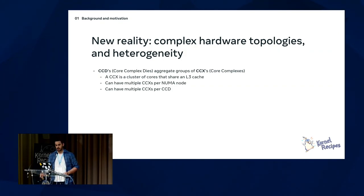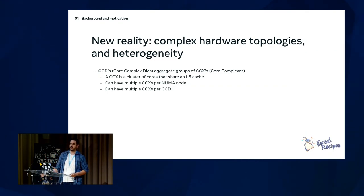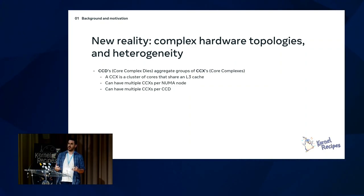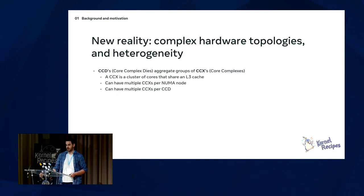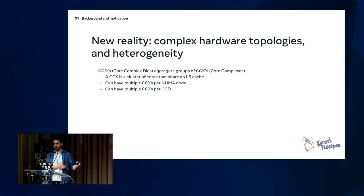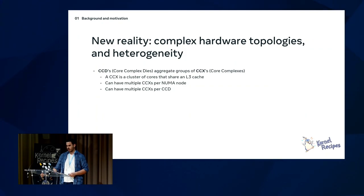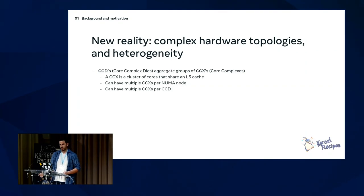Core complex dies and core complexes are a new thing in x86 — you have a chip with multiple L3 caches on a single NUMA node. That's a core complex. The access latencies between tasks in different core complexes is a bit higher than within your own L3 cache, but not as high as going to another NUMA node. Core complex dies are groups of core complexes still on the same NUMA node.